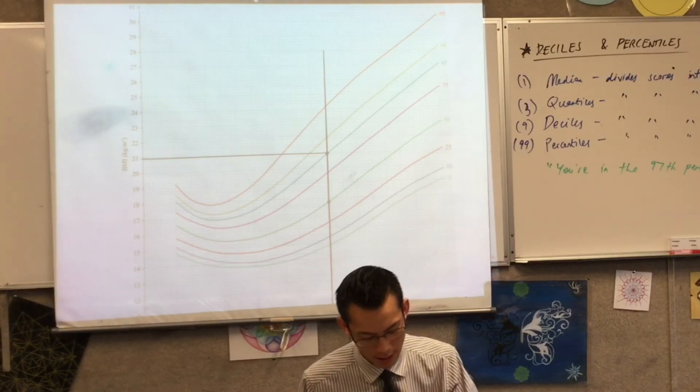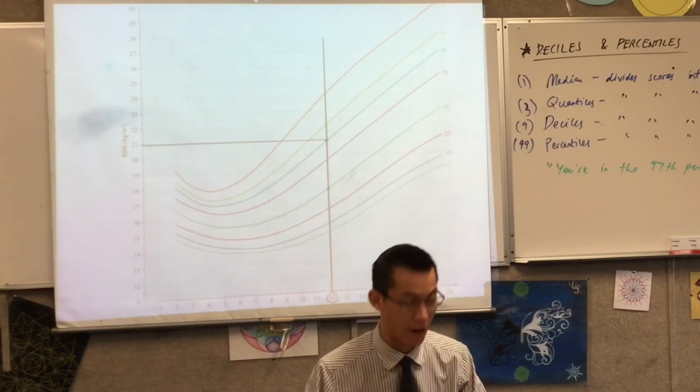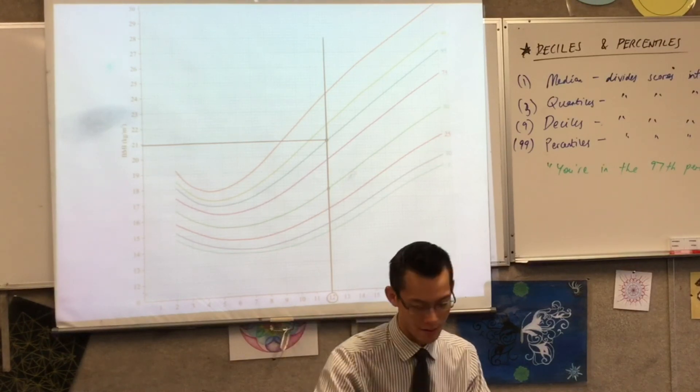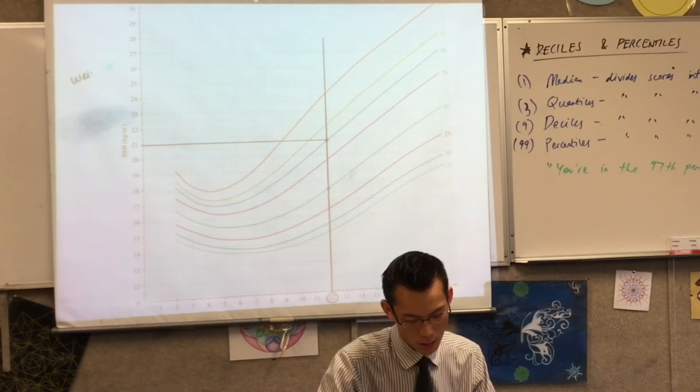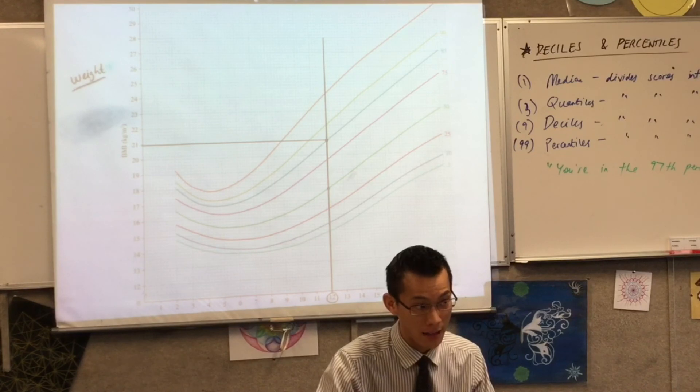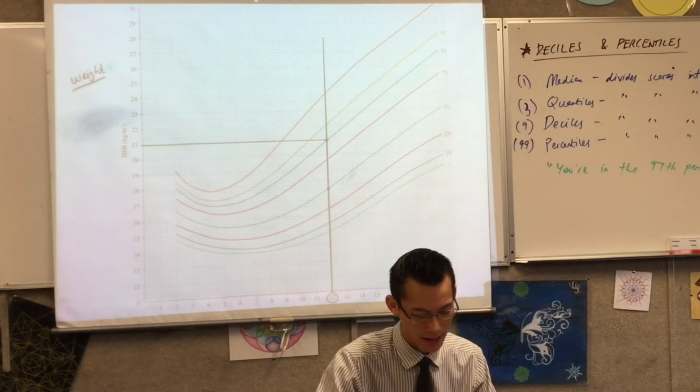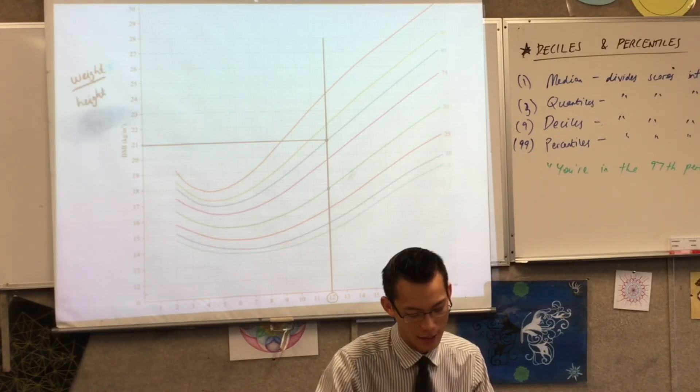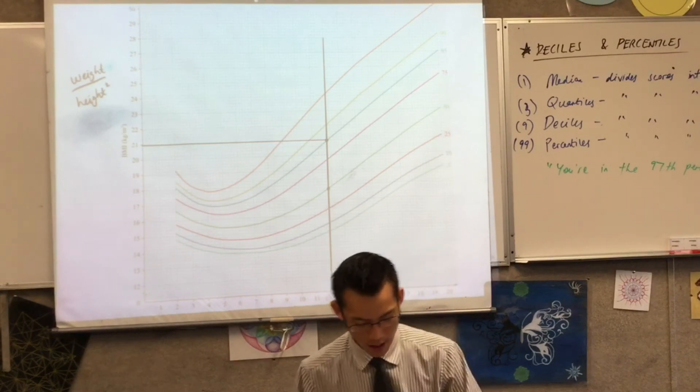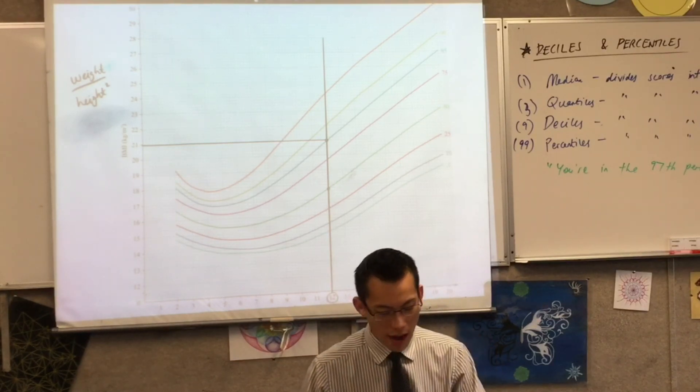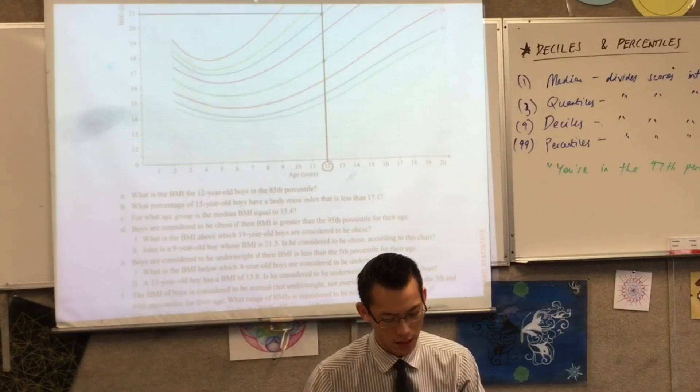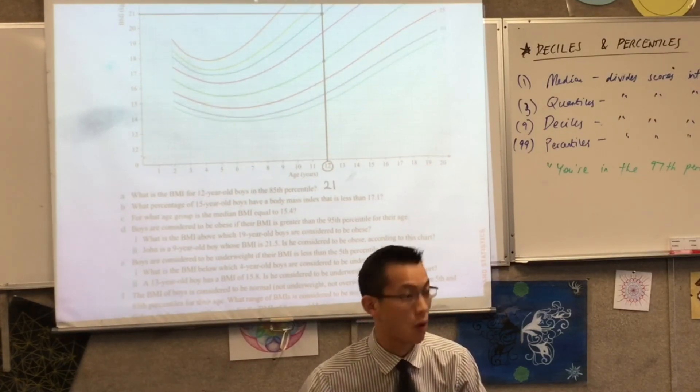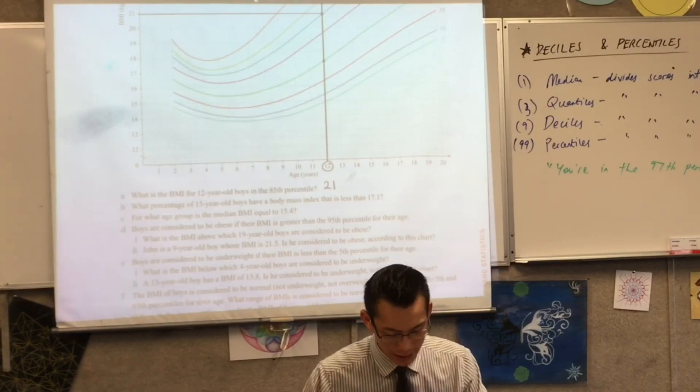By the way, if you want to, well, I mean, only the boys can do it for this particular graph, but if you want to position yourself, just in case you can't remember, BMI is weight divided by height squared, and the height has to be in meters. All right, so I've answered that first one. The BMI for 12-year-olds in the 85th percentile is 21. Let's keep going.